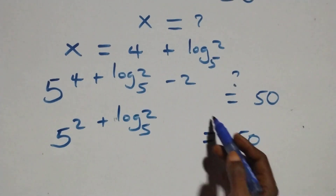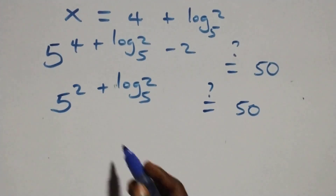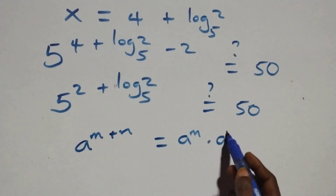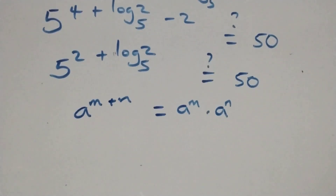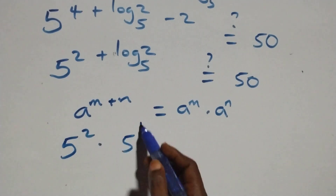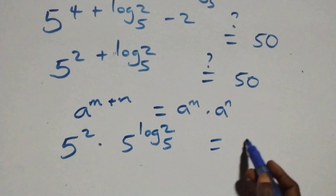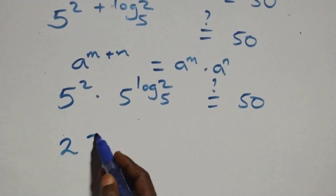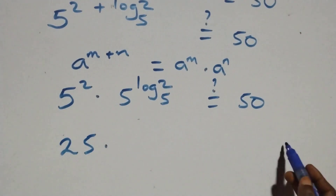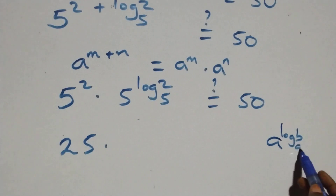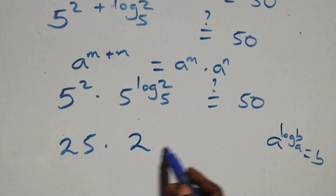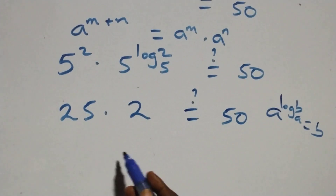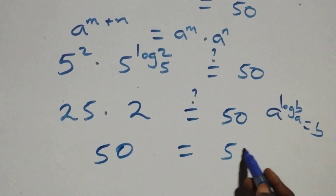Is this equals to 50 on this side? This follows the law of indices: a raised to power m plus n is the same as a raised to power m times a raised to power n. So we have 5 squared times 5 raised to the power log 2 base 5. 5 squared is 25. Then by the law a raised to power log b base a equals b, we get 2. So 25 times 2 gives us 50, which equals 50 on this side.